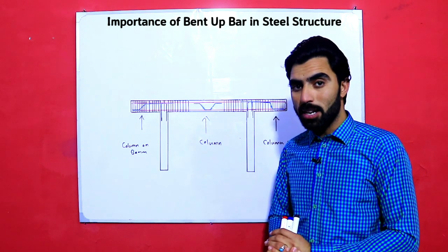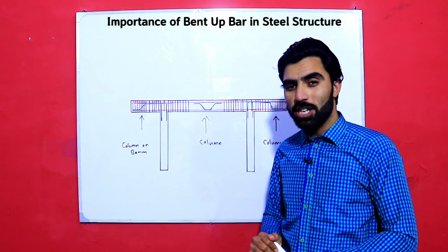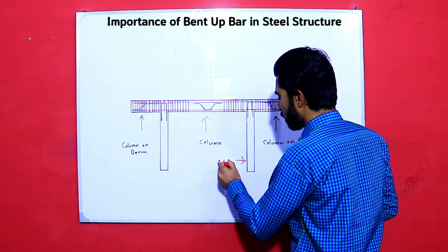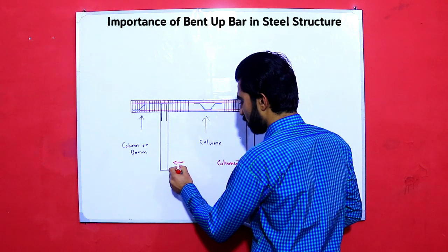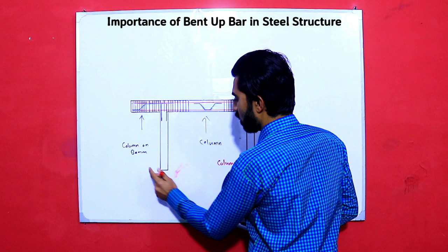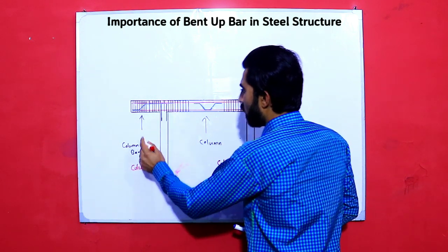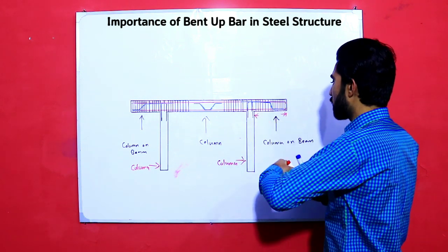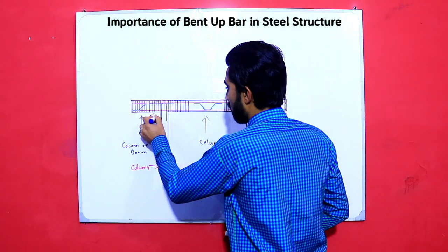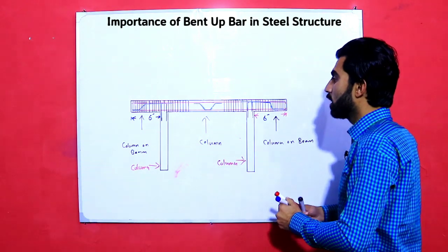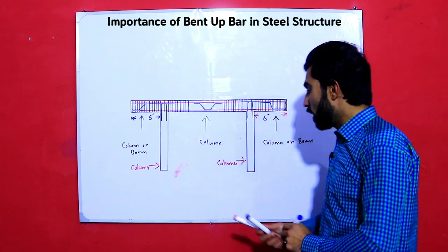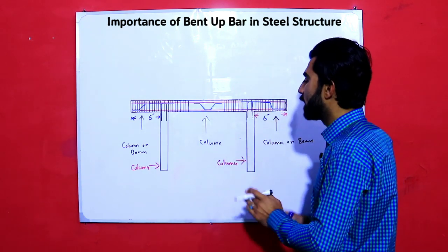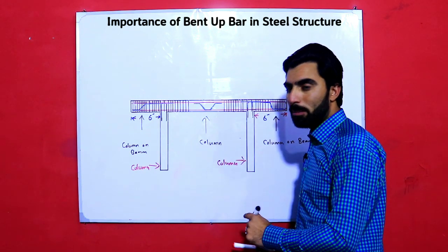If this topic is helpful for you, please like this video and subscribe the channel and press the bell icon if you are new. Let's start. As you know, this is a column, this is also a column, this one is also a column — these are the main supports. These are cantilever sections, for example 6 feet on each side. How can we provide a column on the beam? This is a must-watch video from start to end. Today you will learn about bent-up bar, specially in steel structure.